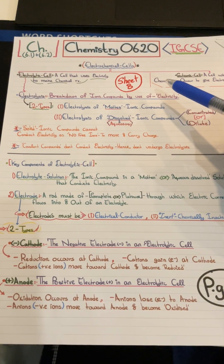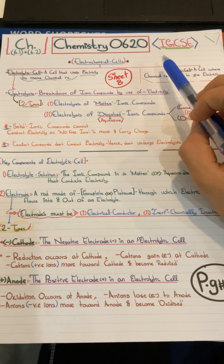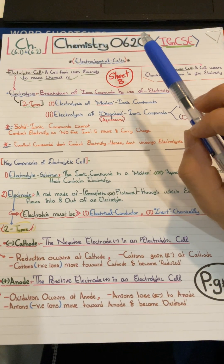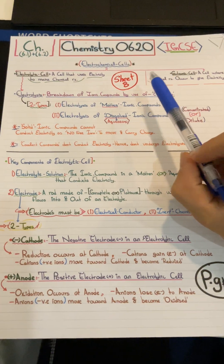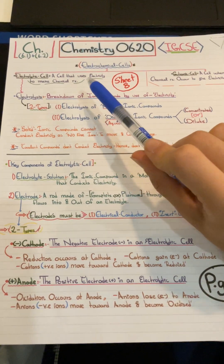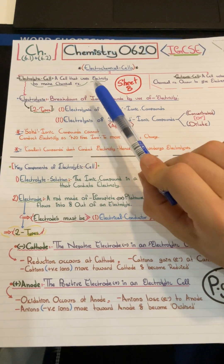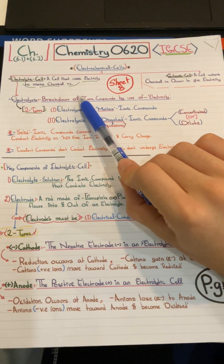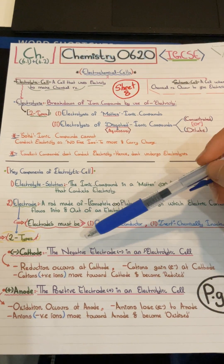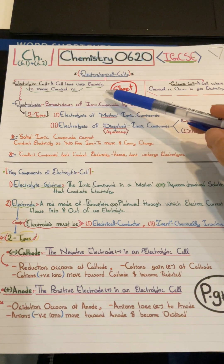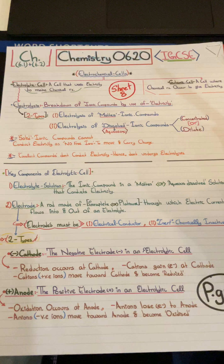In this video we'll be covering the second lesson in electrochemistry, topic four of Chemistry 0620 Cambridge IGCSE. We'll mainly be talking about electrochemical cells and electrolysis. There are two types of cells: the electrolytic cell, which uses electricity to make a chemical reaction, and the galvanic cell, where chemical reactions occur to give out electricity. Our main focus throughout the whole lesson will be on electrolytic cells.